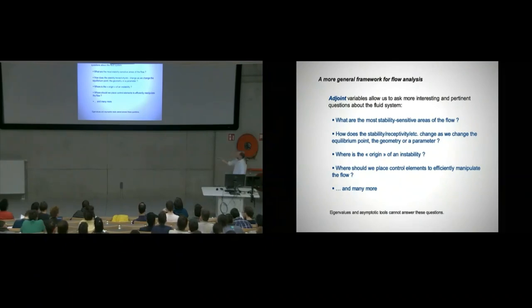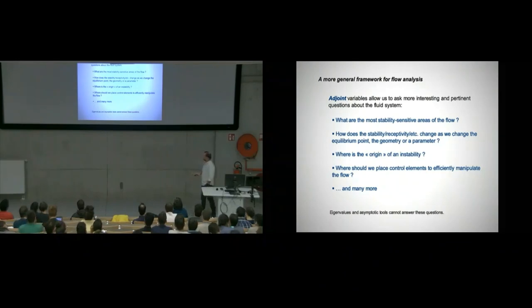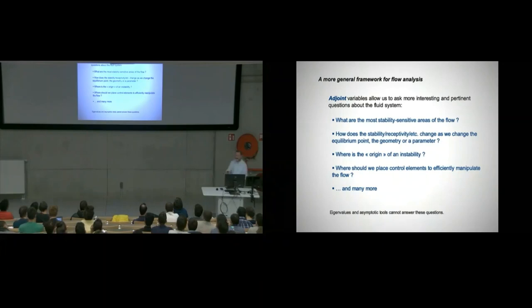Also, of course, where should we place control elements to efficiently manipulate the flow? And many more. This is the added value that we get. We can do a much more complex stability analysis or flow analysis. And eigenvalues and asymptotic tools that we have based on Lyapunov just cannot do that.